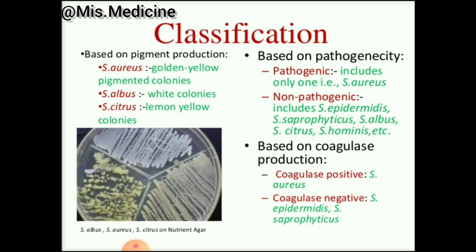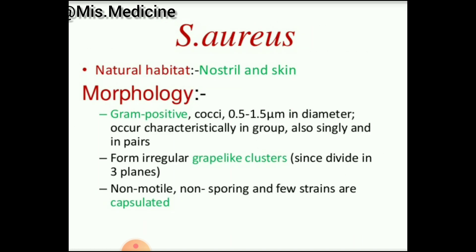Based on pigment production: Staphylococcus aureus has golden yellow pigment colonies, Staphylococcus albus has white colonies, and Staphylococcus citreus has lemon yellow colonies. Another classification is based on coagulase production: coagulase positive is Staphylococcus aureus, and coagulase negative are Staphylococcus epidermidis and Staphylococcus saprophyticus.